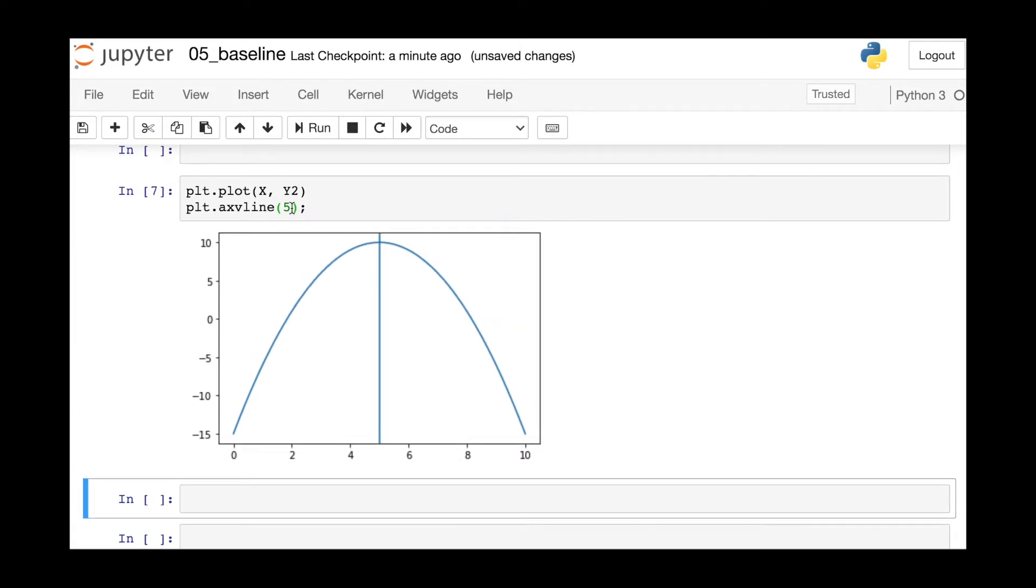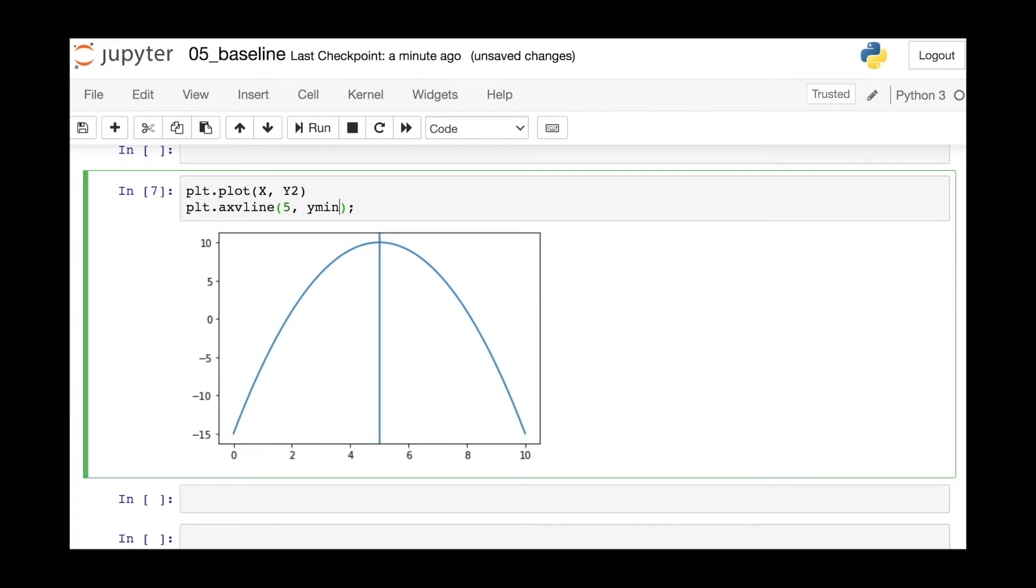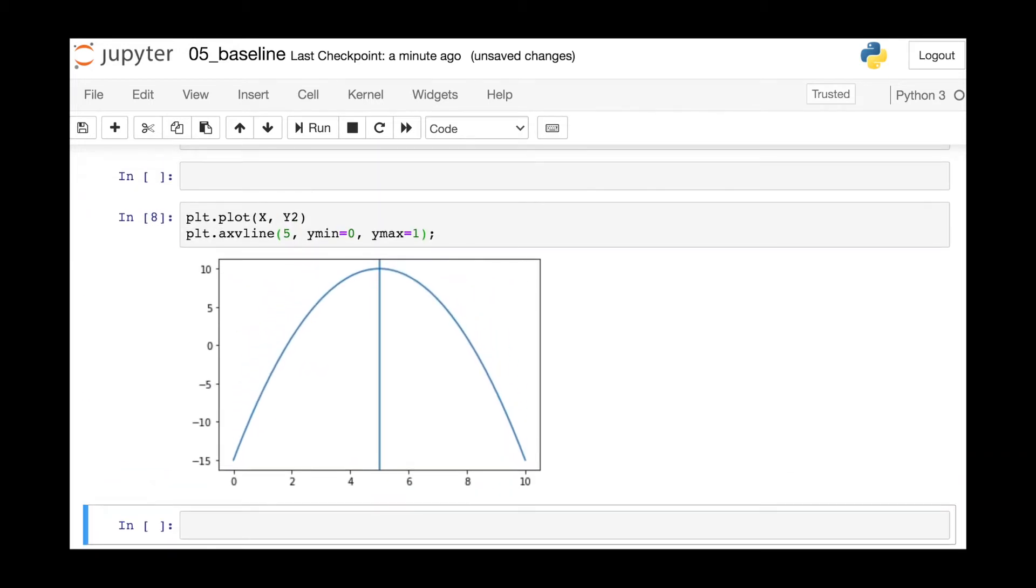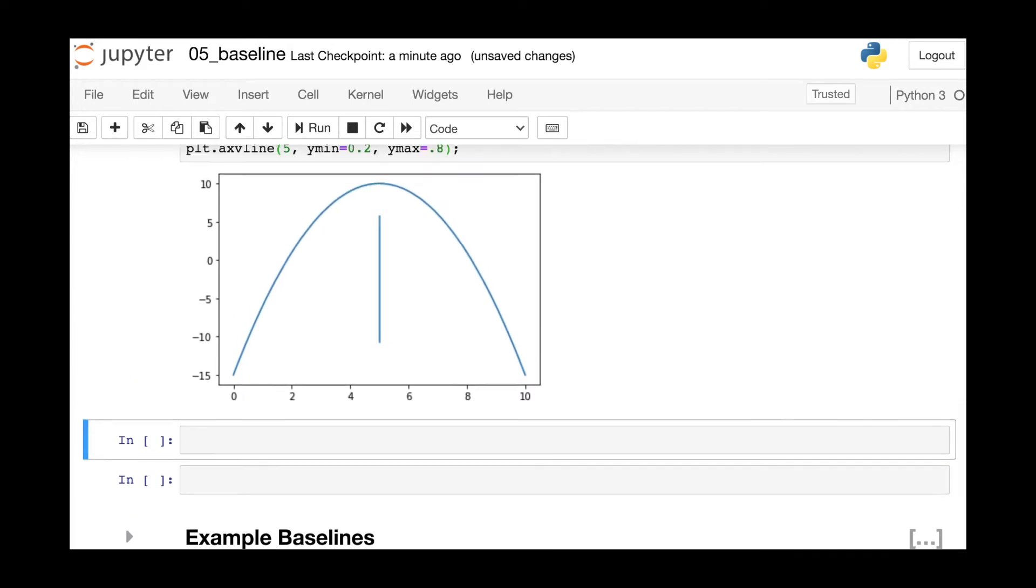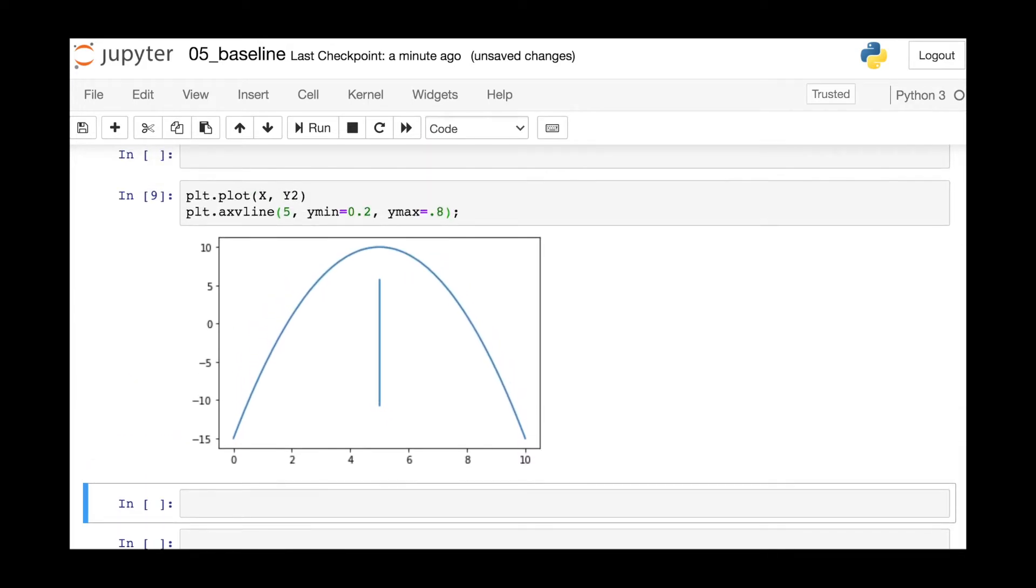There are two other arguments that control where this vertical line will appear on the plot. So ymin and ymax have default values of 0 and 1 respectively. 0 maps to the bottom of the figure, while 1 maps to the top. So if we reduce these down to 0.2 to 0.8, now we're actually just plotting a vertical line across the middle 60% of our figure.